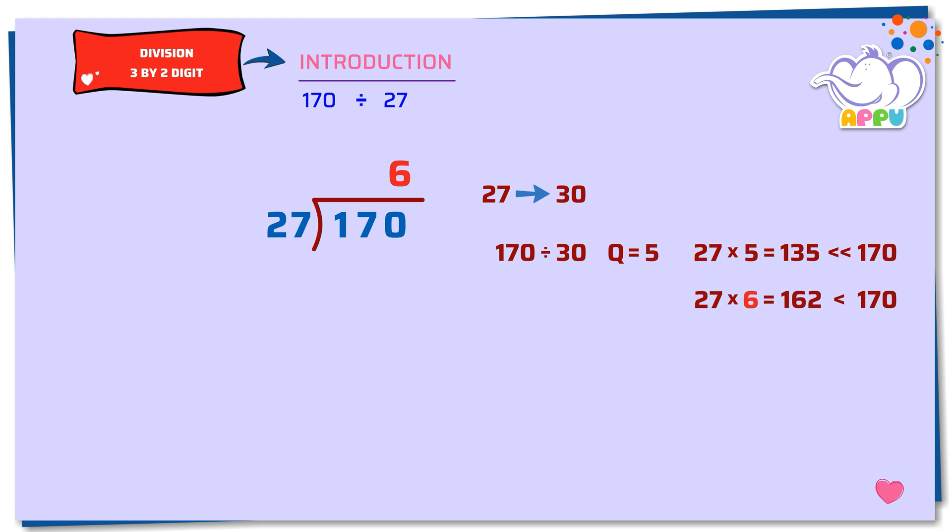Step 2. We multiply 27 and 6. We get 162. Step 3. We subtract 170 minus 162 equals 8. We stop division because 8 is less than 27. So, the quotient is 6 and the remainder is 8.